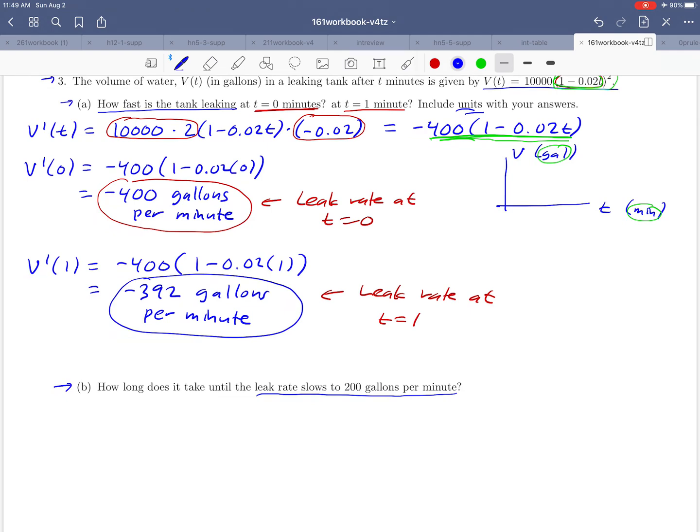So it's like asking us when the derivative reaches negative 200 gallons per minute. And why are these numbers negative? Actually, I think we kind of glossed over that point up here in part A. These negative answers that we got, negative 400, negative 392, are just indicating that we're losing volume. So because we've got a leak rate of 200, that means that we want to set the derivative equal to negative 200 to figure out the time that we're looking for.